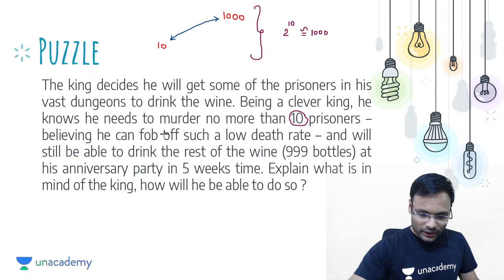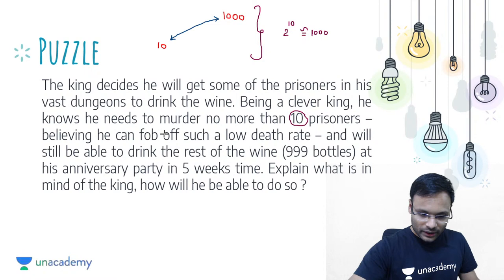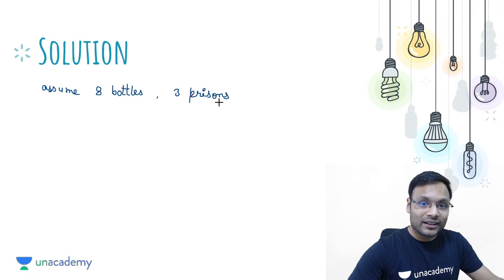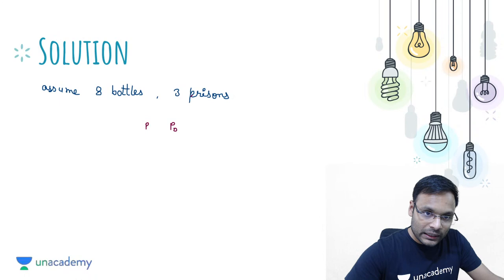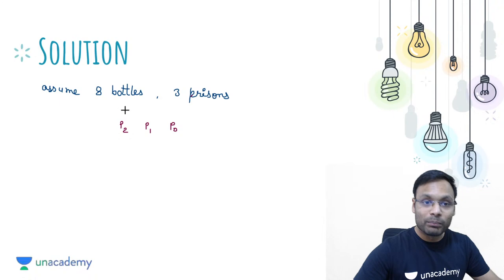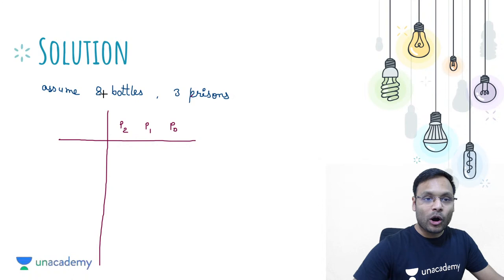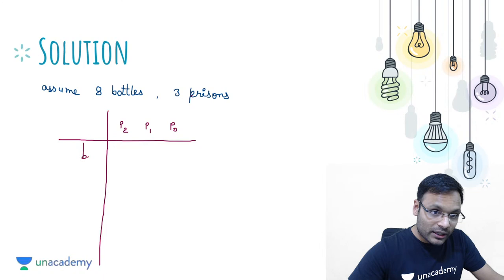The answer is quite simple. Give the prisoners a numbering: P0, P1, and P2. Also number the bottles in binary from bottle number 1 to bottle number 7. Bottle 1's binary is 001, bottle 2 is 010, bottle 3 is 011, bottle 4 is 100, bottle 5 is 101, bottle 6 is 110, bottle 7 is 111. These are your 7 or 8 bottles.